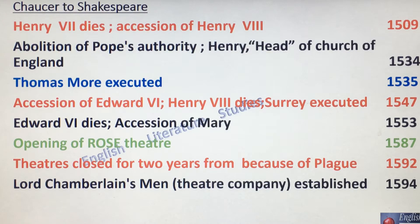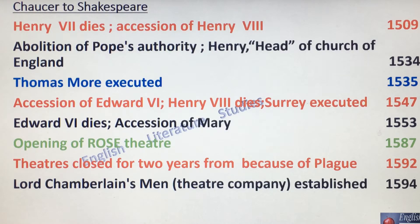Thomas More was executed in 1535. Accession of Edward VI — Henry VIII dies — and Surrey was executed in 1547. Edward VI dies. Accession of Mary in 1553. Opening of the Rose Theatre, 1587. Theatres remained closed for two years because of plague, that happened in 1592.